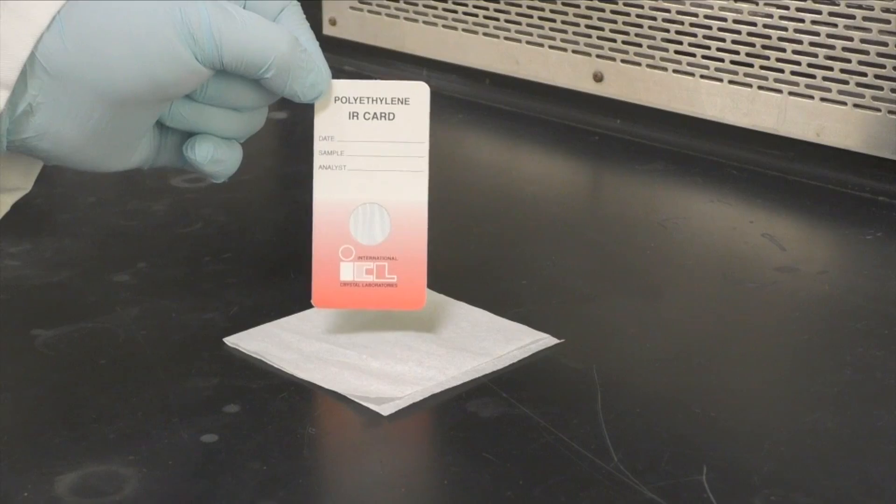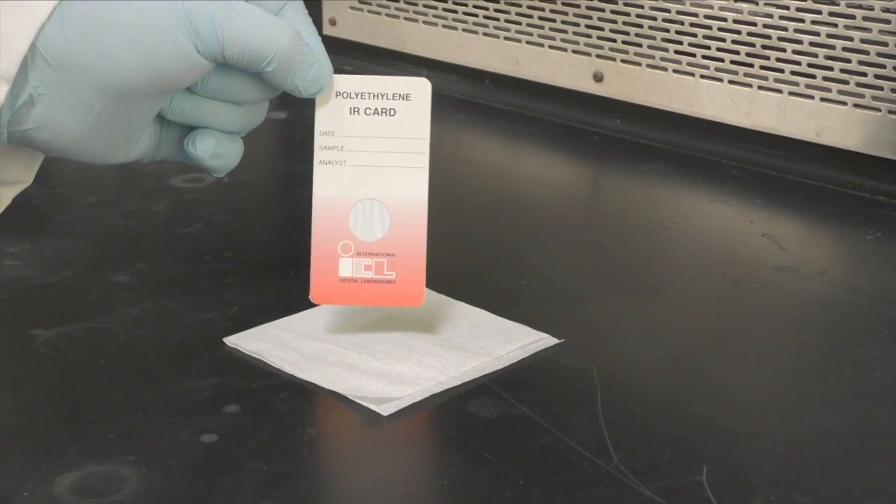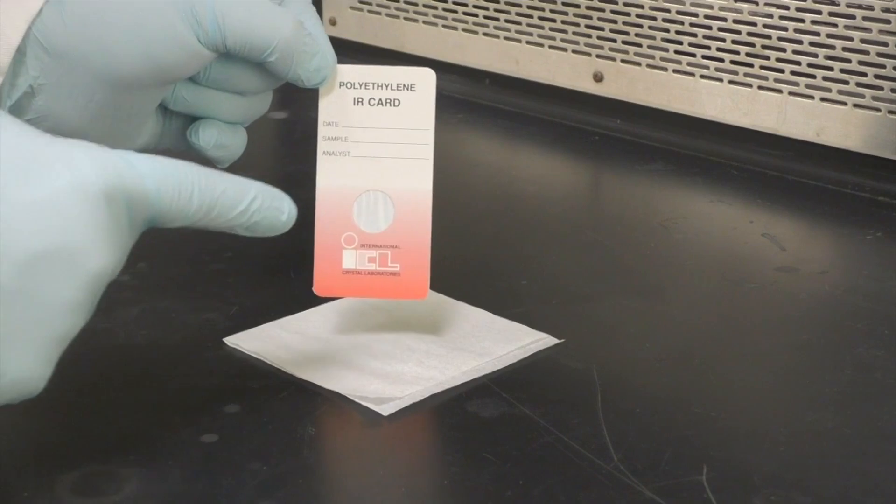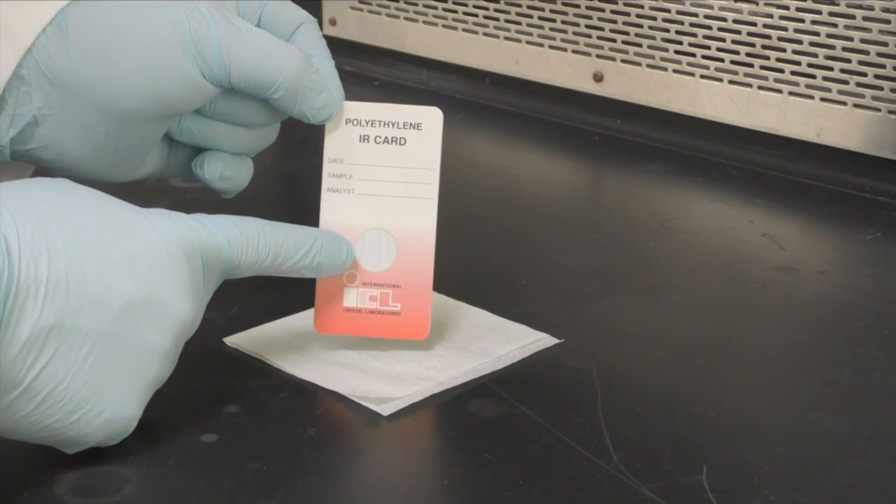First, let's take a look at the IR sample card you will be using. The card has a polyethylene window so you may hear this card referred to as a PE card by your TA. This is where you will add your sample.